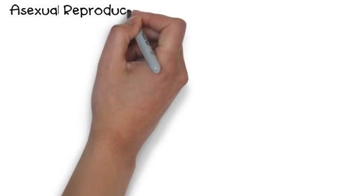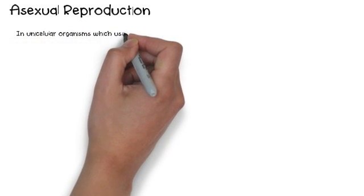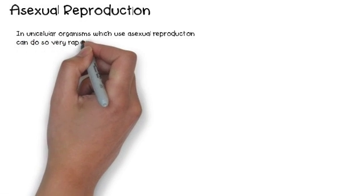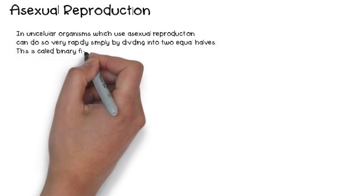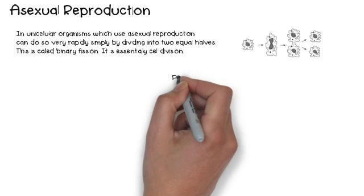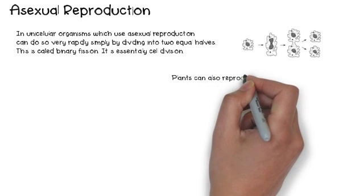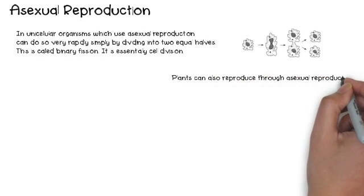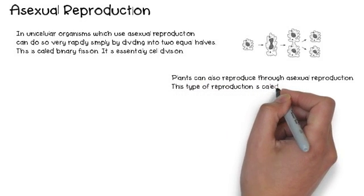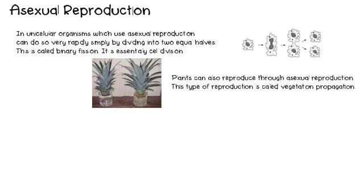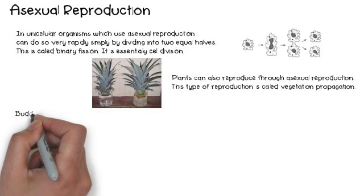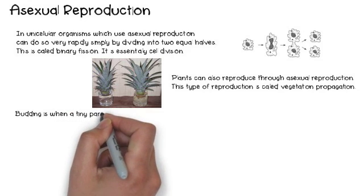Asexual reproduction has many different ways of doing this. There's binary fission, where a unicellular organism can reproduce so quickly and rapidly by dividing into two equal halves through cell division — this is also called binary fission. Then you have plants that can reproduce through something called vegetative propagation. That's basically when you take a part of the plant and replant it, and it starts to grow as a new plant identical to the original — like this pineapple. Try it: cut off the top, put it in some water, and see what happens.